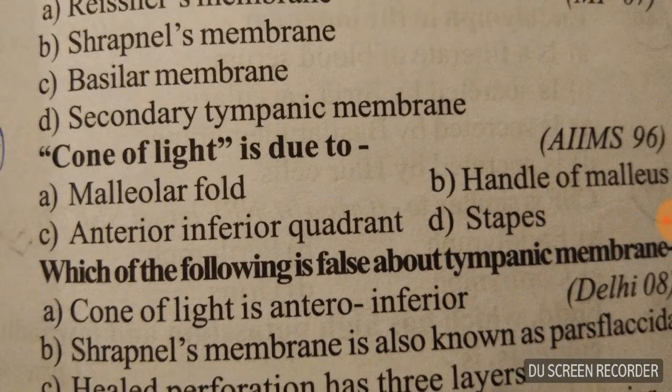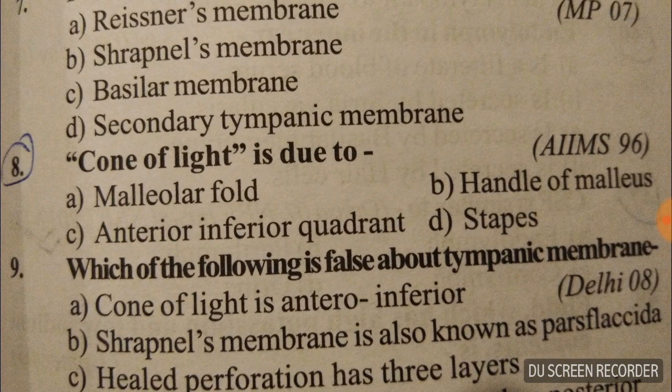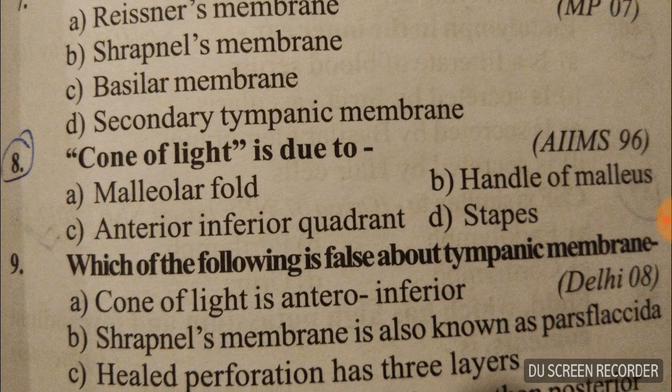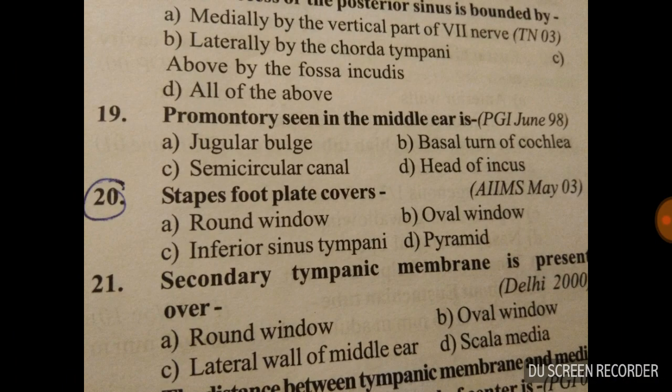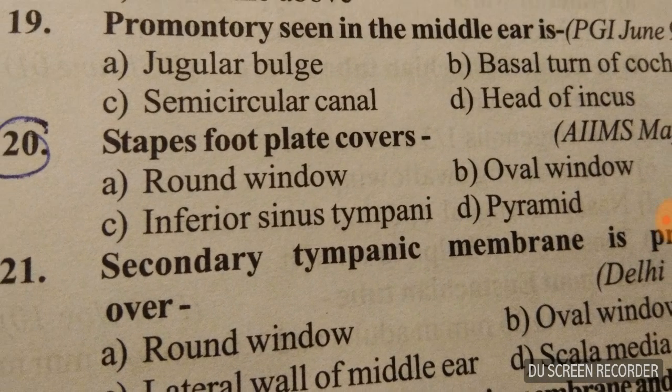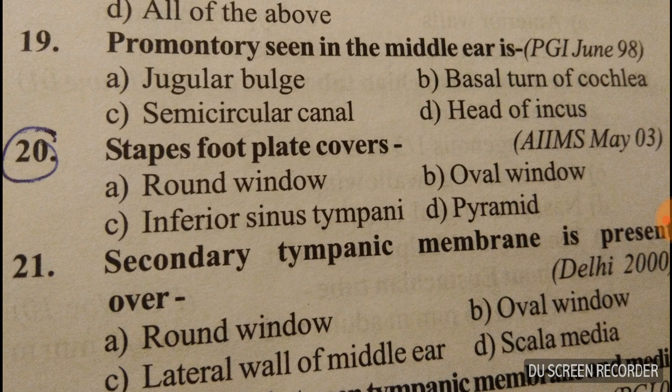Question number eight: cone of light is due to which option? Option A: malleolar fold. Option B: handle of malleus. Option C: inferior quadrant. Option D: stapes. The answer is handle of malleus.